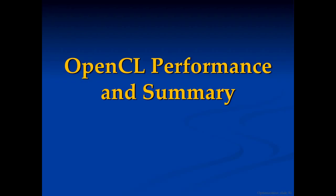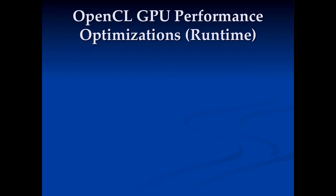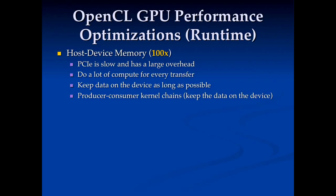Let's talk about a few tips for OpenCL performance and summarize what we have with OpenCL. Getting performance optimizations at runtime — the big one is really moving data back and forth, getting data from the host (the CPU) to the device (the GPU). If you're over PCIe, we know that's slow and it takes a long time. So you want to transfer data once and do lots of computation.